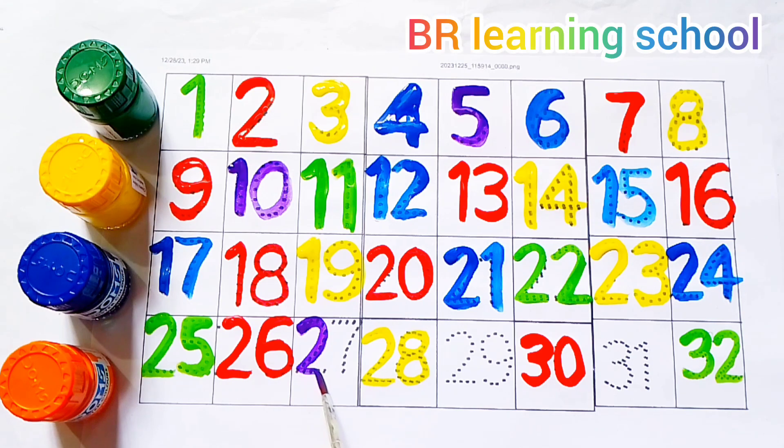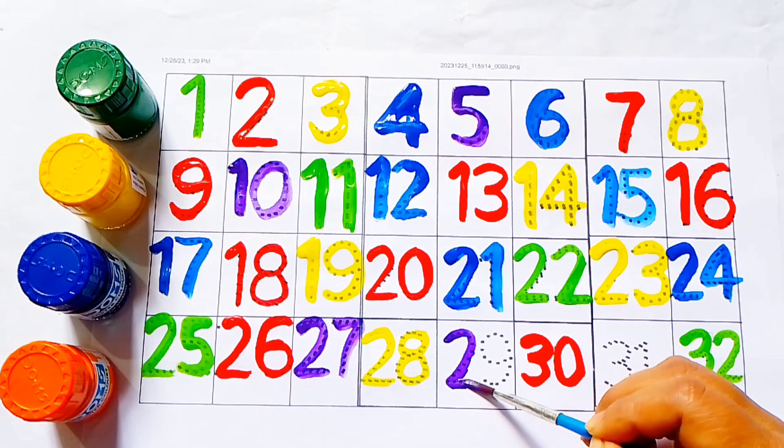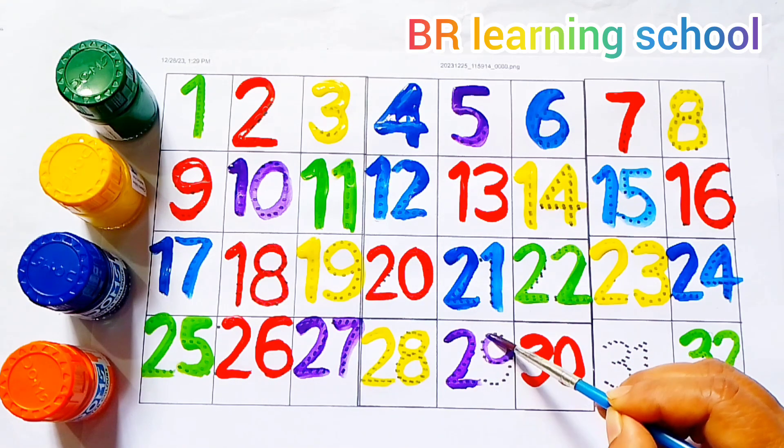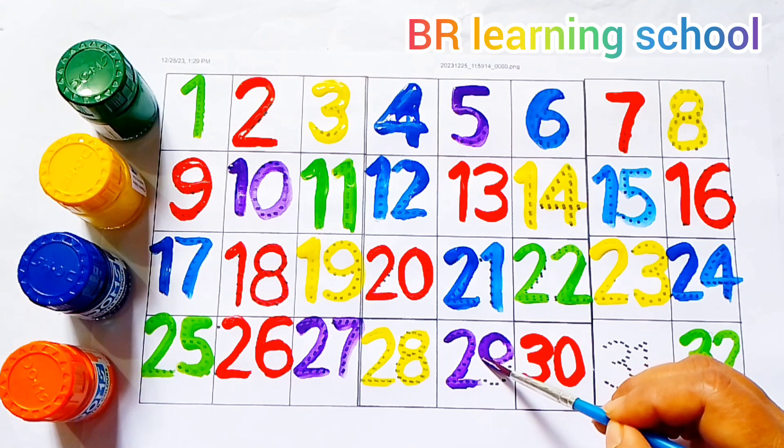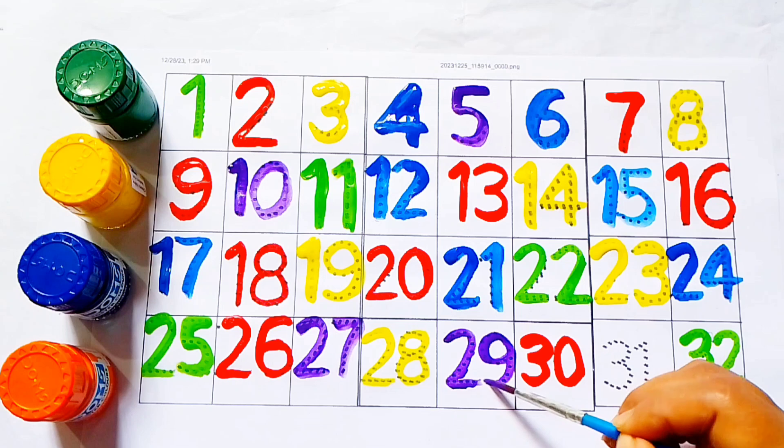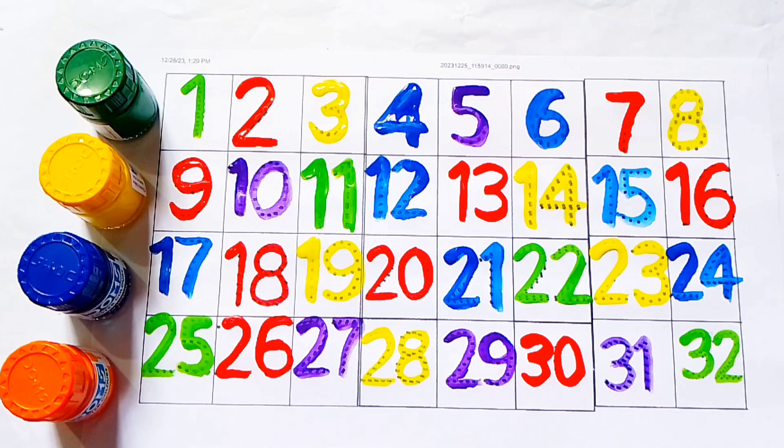2, 7, 27. 2, 7, 27. 2, 9, 29. 2, 9, 29. 2, 9, 29. This is 29. 3, 1, 31. 3, 1, 31.